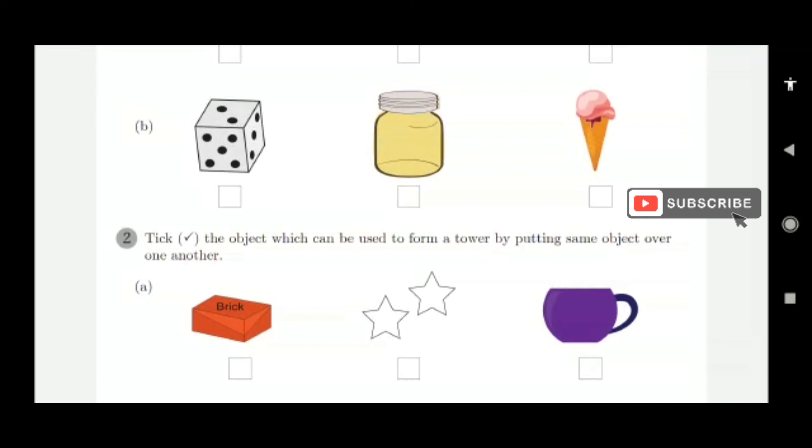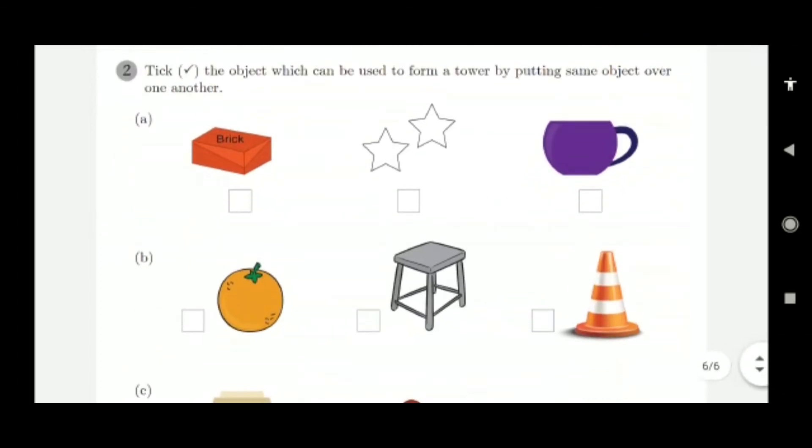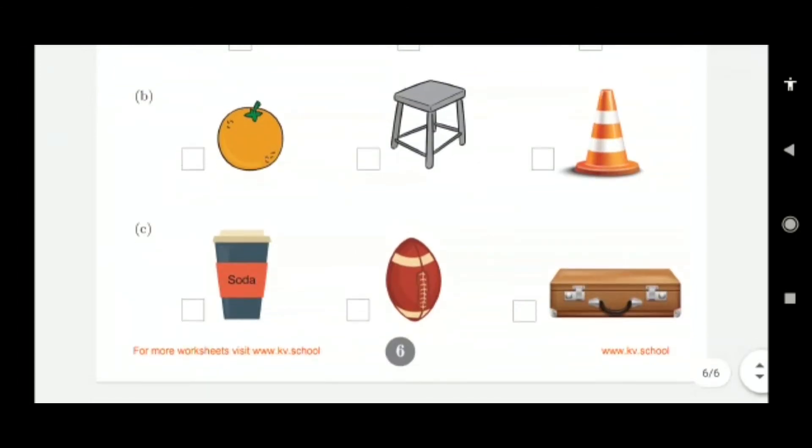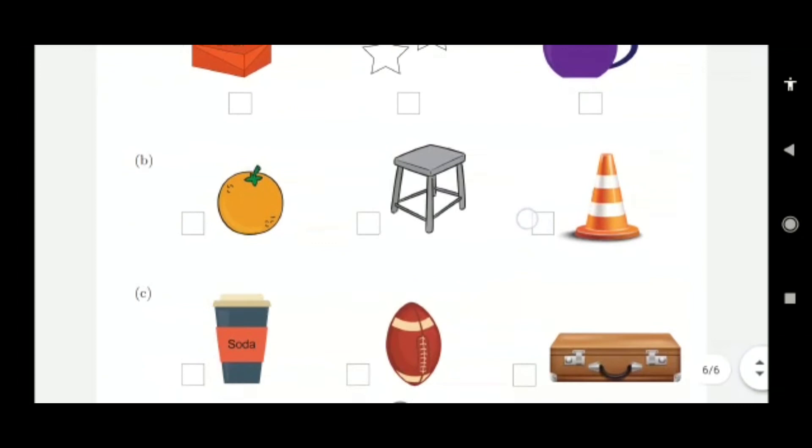Then the object which can be used to form a tower by putting same object over one another. Take the object which can be used to form a tower by putting object over one another. Yes, this is what? Brick. This is brick.